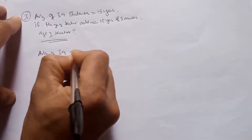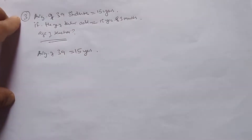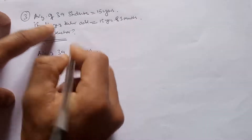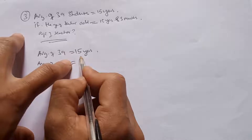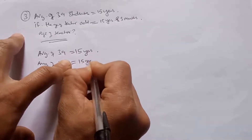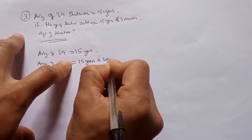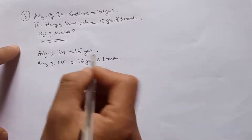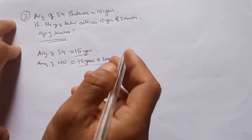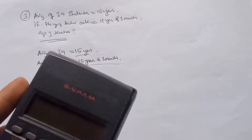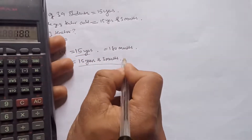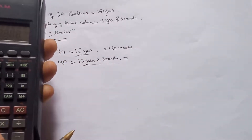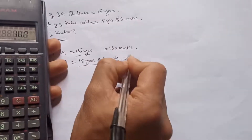The average of 39 students is 15 years. When the teacher is added, the total becomes 40 people and the average changes by 3 months, becoming 15 years and 3 months. We will convert everything into months. 15 multiplied by 12 gives 180 months. Adding 3 months, it becomes 183 months.